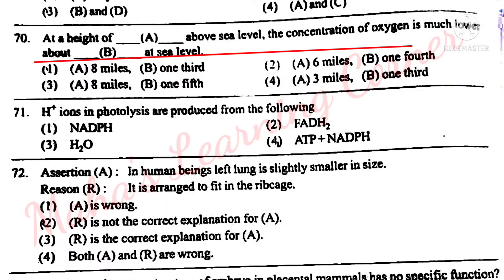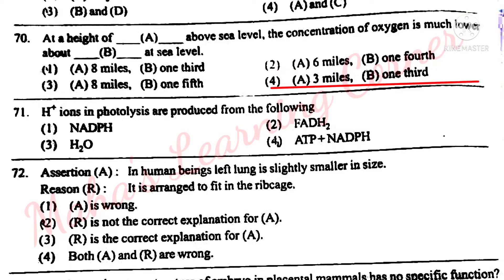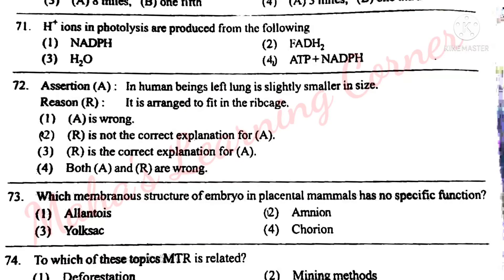Next question. At a height of dash above sea level, the concentration of oxygen is much lower above dash at sea level. Options: 8 miles / one-third; 6 miles / one-fourth; 8 miles / one-fifth; 3 miles / one-third. Correct answer: Option 3 – at a height of 8 miles above sea level, the concentration of oxygen is much lower, about one-fifth of that at sea level.